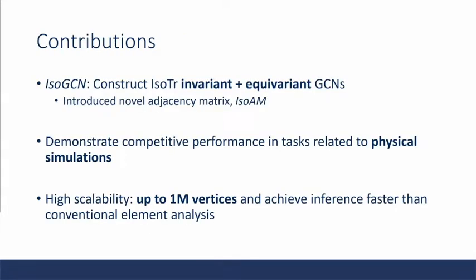The paper introduces three main contributions. It introduces the concept of iso-GCNs, which construct isometric transformation invariant and equivariant GCNs through the introduction of a novel adjacency matrix, the iso-adjacency matrix. They demonstrate that their method is competitive with state-of-the-art models in tasks related to physical simulations. And notably, they show that their method is highly scalable and computationally efficient, and therefore achieves inference faster than conventional element analysis.